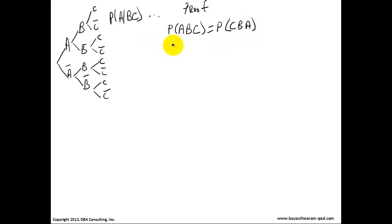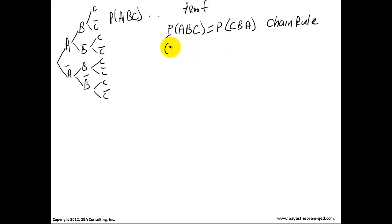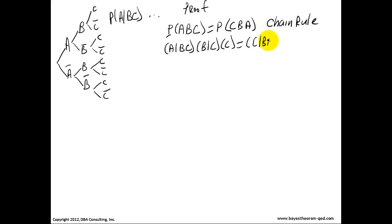Alright, so by the chain rule, I'm not going to use P's throughout this, but you'll know they're all probabilities. So, probability of A given B-C times probability of B given C times probability of C equals probability of C given A-B times probability of B given A times probability of A. So this is what I want to set them equal to.